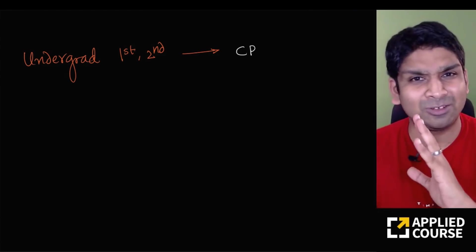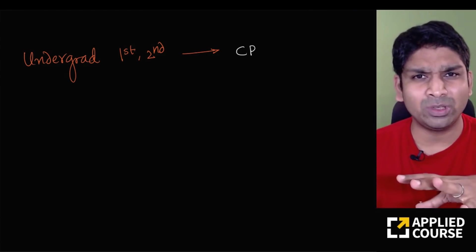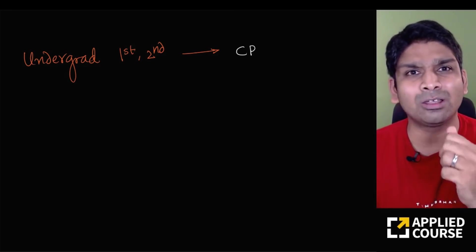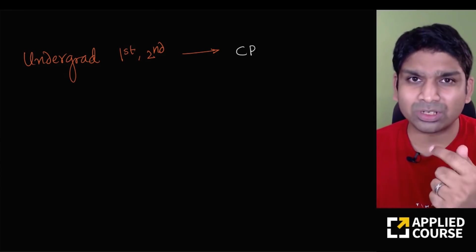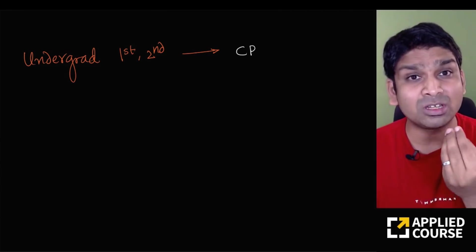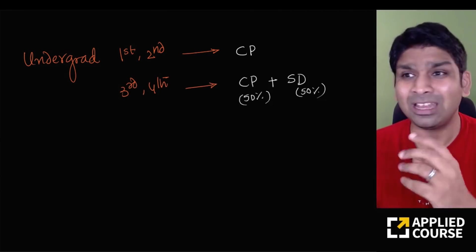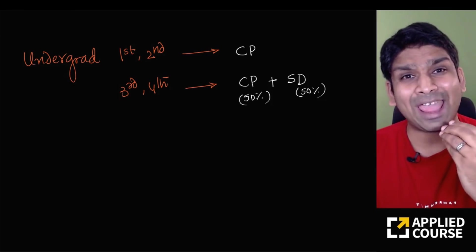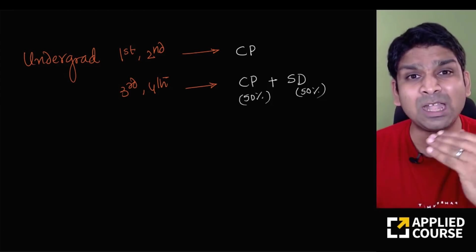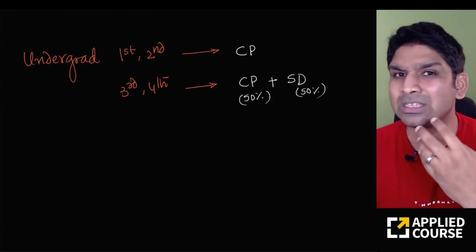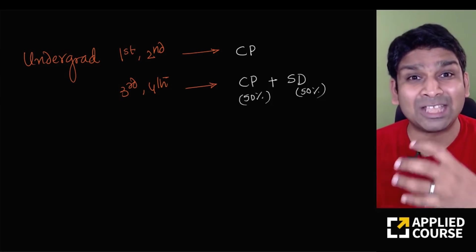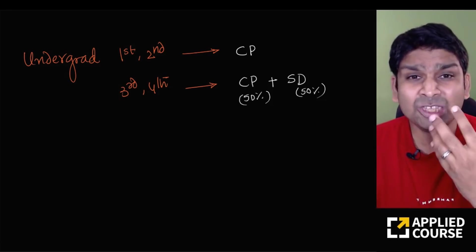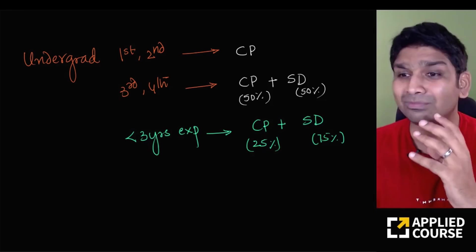Now, what should you focus on? Here's a simple rule of thumb: if you're an undergraduate student in your first and second year — whether engineering, BSc, BCom, or anything else — focus on picking up one major programming language, become good at data structures and algorithms, and participate in competitive programming. In your third and fourth year of a BTech program, spend 50% of your time on competitive programming (since many companies ask for it for entry-level roles) and 50% building useful software — course projects, third-year or final-year projects — something tangible.